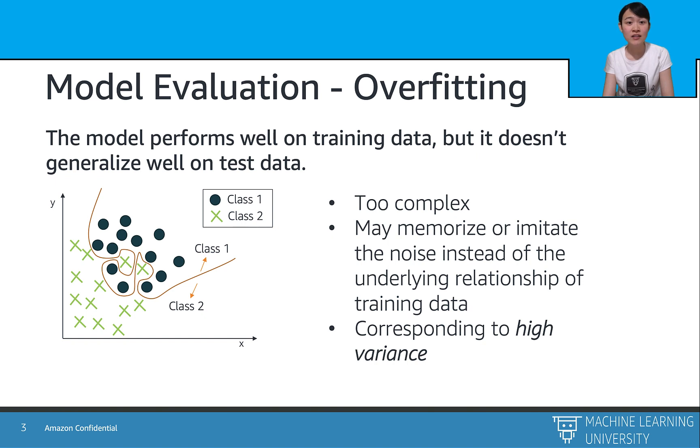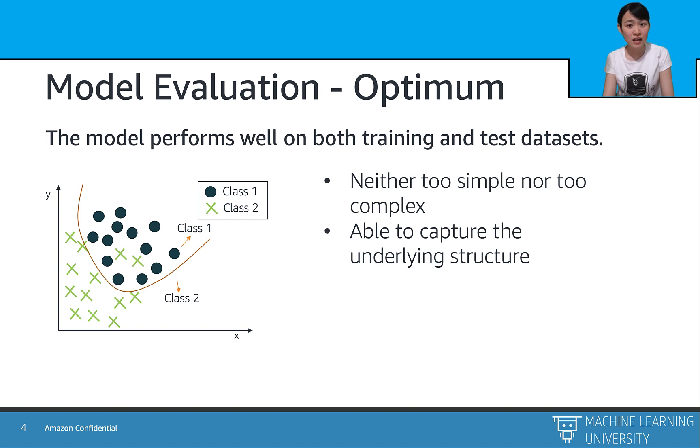We often call this model a high-variance model in the statistic context, which means small changes in input data will lead to large changes in output results. So the optimal model should neither be underfitted nor overfitted. In this case, the model is neither too simple nor too complex, and it performs well on both training and test dataset, which means it's capable of capturing the underlying structure of the input features. And the optimal model is of low bias and low variance.